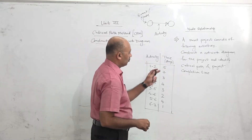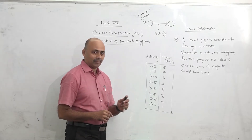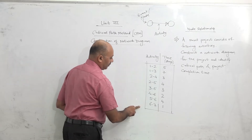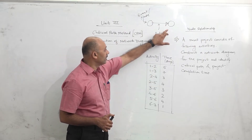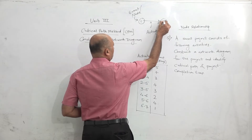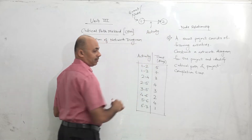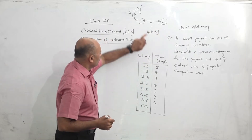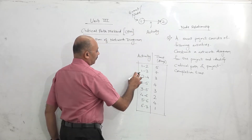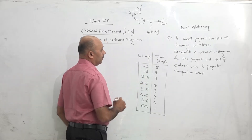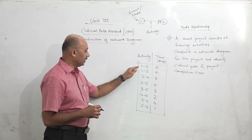Now if you see this question: a small project consists of following activities — construct a network diagram for the project and identify the critical path and project completion time. The activities are given in terms of numbers, and these numbers are the numbers of the respective events. For example, activity 1-2 is the activity which connects event number 1 and event number 2. Event number 1 is the start of the activity, and event number 2 is the end of the activity. This relationship is called node relationship — when the activity is expressed in terms of its events.